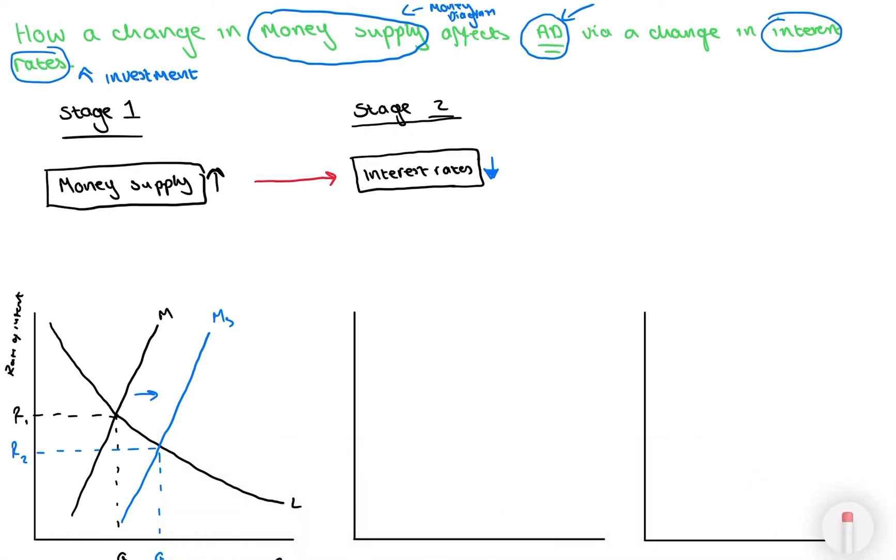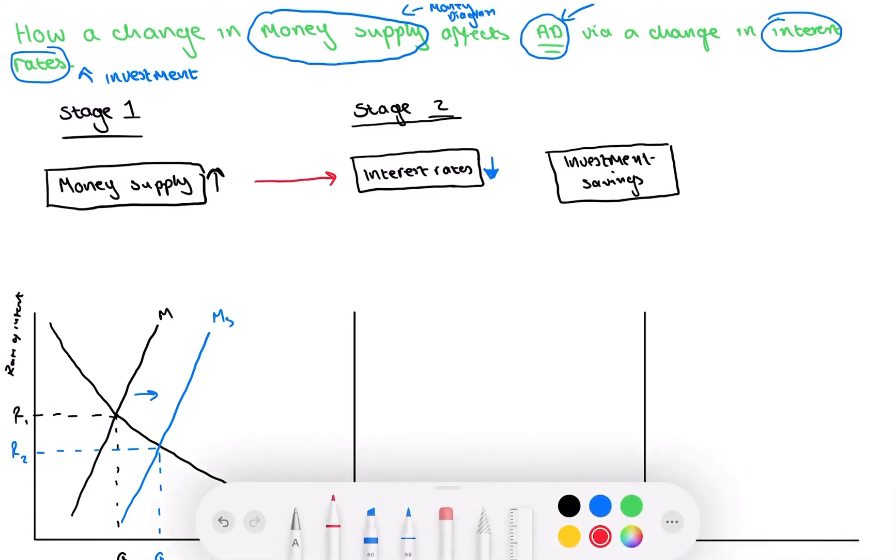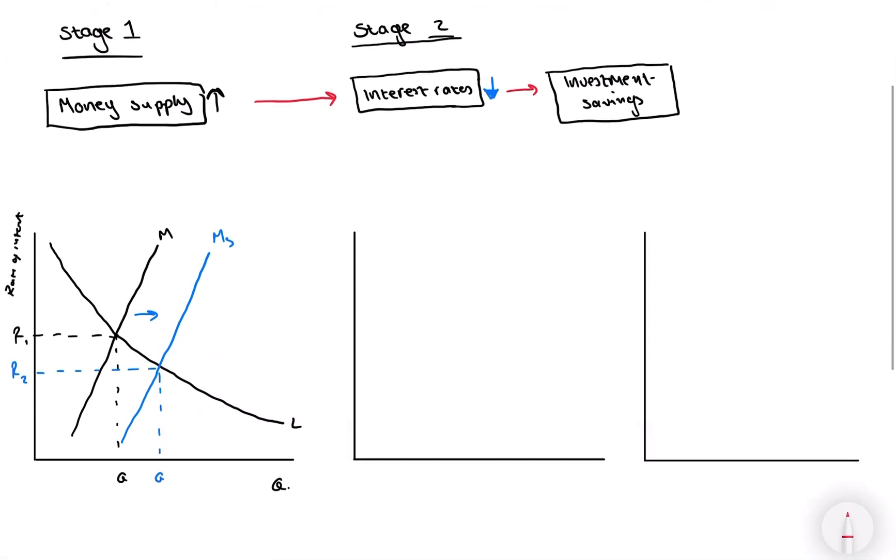What is going to happen to investment and savings? Now, Keynes and the monetarists have very different views on this. But for this example, we're just going to use the neutral view. We're going rather apolitical, you may say.